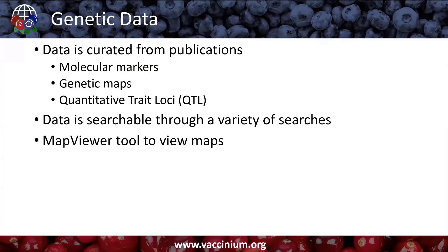Like Dori mentioned, we curate the data from publications, and most of the genetic data we curate is molecular maps, molecular markers, genetic maps, and QTL data. Occasionally, people will share their information with us from their publications, which makes it easier for us, because usually it's already in Excel, and we can easily adapt it to our upload templates.